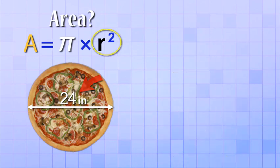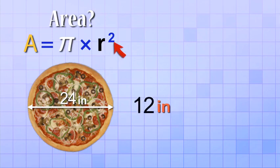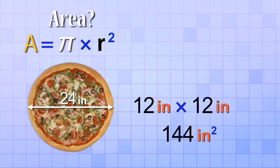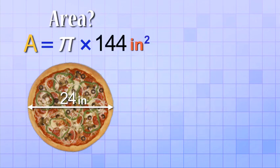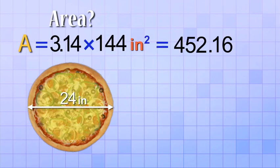Fortunately, that's really easy. The radius is just half of the diameter. So we just need to divide the diameter by 2. 24 inches divided by 2 gives us 12 inches for the radius. And now that we know the radius, we need to square it. 12 inches times 12 inches equals 144 inches squared. Next, we just multiply that by pi. 144 times 3.14 is 452.16. So the total area of the pizza is 452.16 square inches.